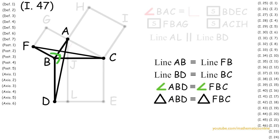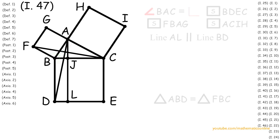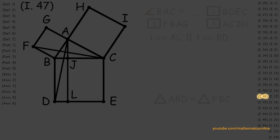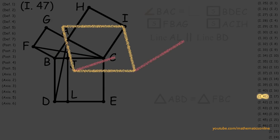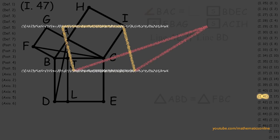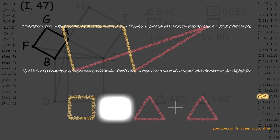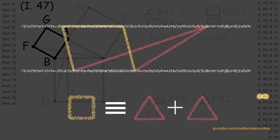So now we've proved that both triangles are congruent. In the second component of the proof, we focus on using Proposition 41. In Proposition 41, we prove that if a parallelogram and a triangle have a base in common and are in the same parallel lines, then the parallelogram is congruent to double of the triangle.